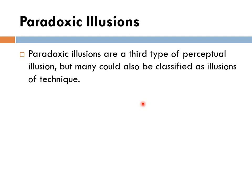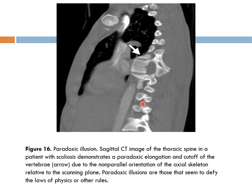Another type is paradoxical illusions — mostly related to technique. In this example, one of the vertebrae appears elongated and cut, making it look like a bizarre shape. This is due to non-parallel orientation of the axial skeleton relative to the scanning plane. The patient has scoliosis, so part of the vertebra appears on one image while the rest shows other parts, and you are confused about what is happening.